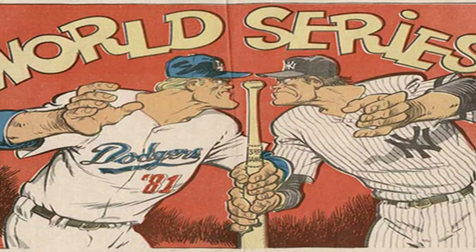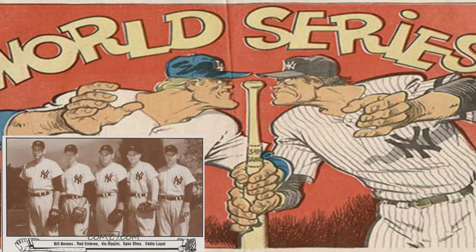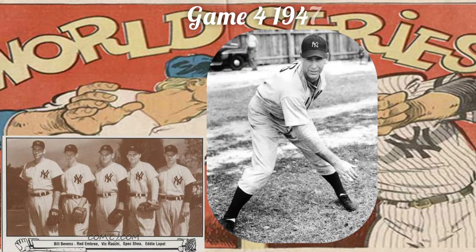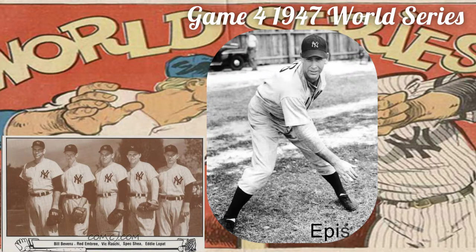Bill Bevins was a journeyman pitcher on the 1947 New York Yankees roster. He was selected to pitch in Game 4 of the '47 World Series, and for eight and two-thirds innings he held down the Brooklyn offense — no hits. He did walk 10 batters, but allowed no hits until Cookie Lavagetto, a pinch hitter, doubled home two runs with two outs in the ninth inning. Bevins would lose that game and never pitch again in the major leagues.